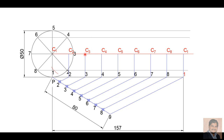Center C3: draw the arc on the horizontal line of point 3. Center C4: draw the arc on the horizontal line of point 4. Center C5: draw the arc on the horizontal line of point 5. Center C6: draw the arc on the horizontal line of point 6, on the right side. C7: draw the arc on the line of point 7. C8: draw the arc on the horizontal line of point 8. Finally, with C1 as center, draw the last arc. These intersection points between the arcs and the lines are my required points.